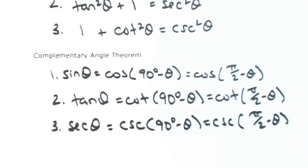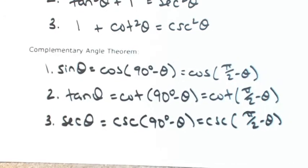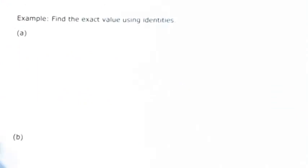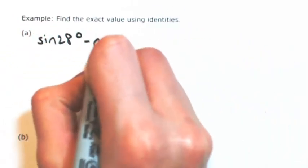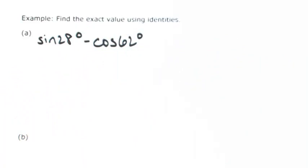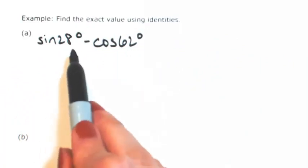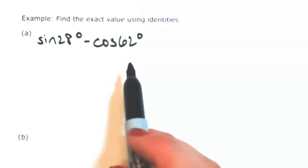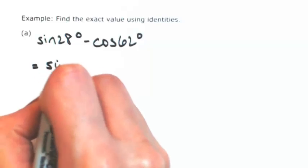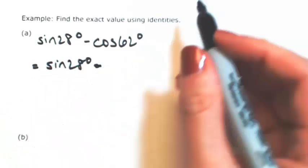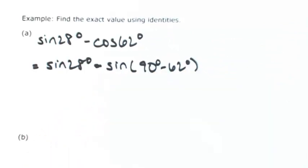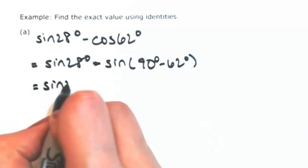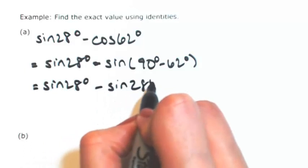Let's do a couple of examples using these identities. Find sine of 28 degrees minus cosine of 62 degrees. I notice that 28 and 62 are complementary, so using the complementary angle theorem, cosine of 62 becomes sine of 90 minus 62, which is sine of 28 degrees. So we get sine 28 minus sine 28, which equals zero.